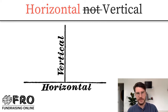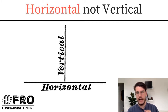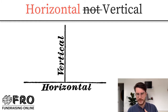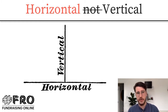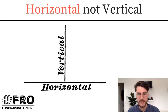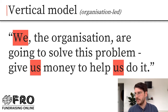Beyond your movement story, you need to define your organisation's theory of change — how is it that you are going to achieve your goal, and where is the power in your movement? This shapes in a really fundamental way how a movement communicates with its supporters. There are two different kinds of model: a horizontal model, which is used more typically by movements and is the most effective for digital movement building, and a vertical model, which is a more traditional way that charities might speak to their supporters.